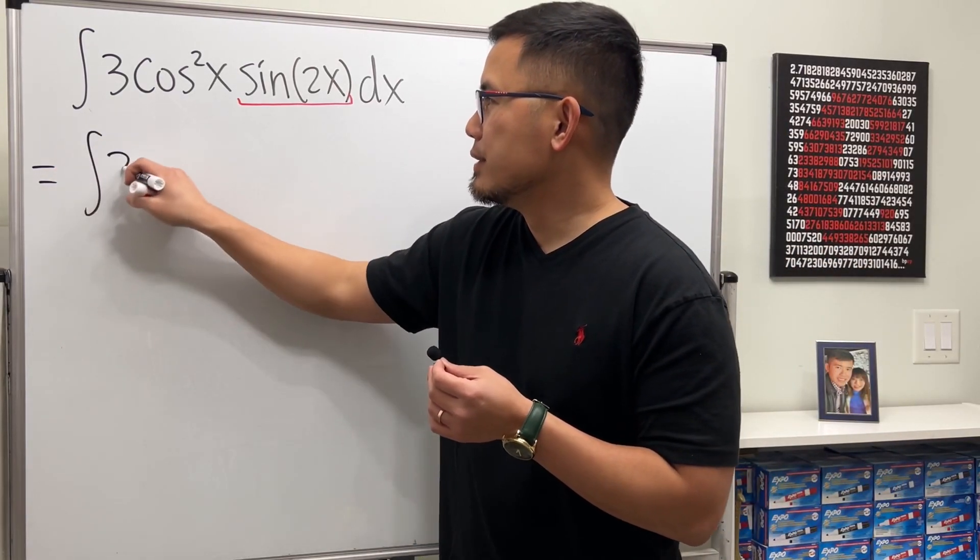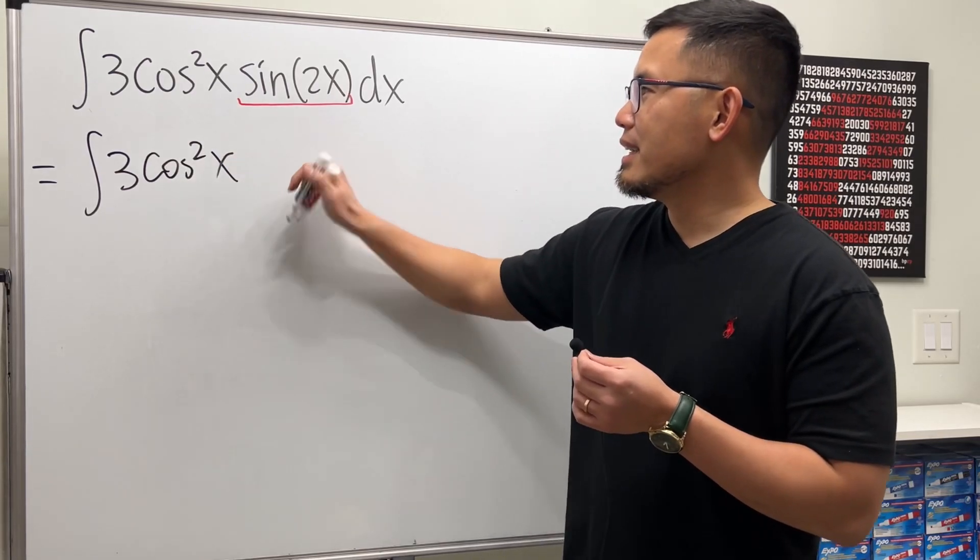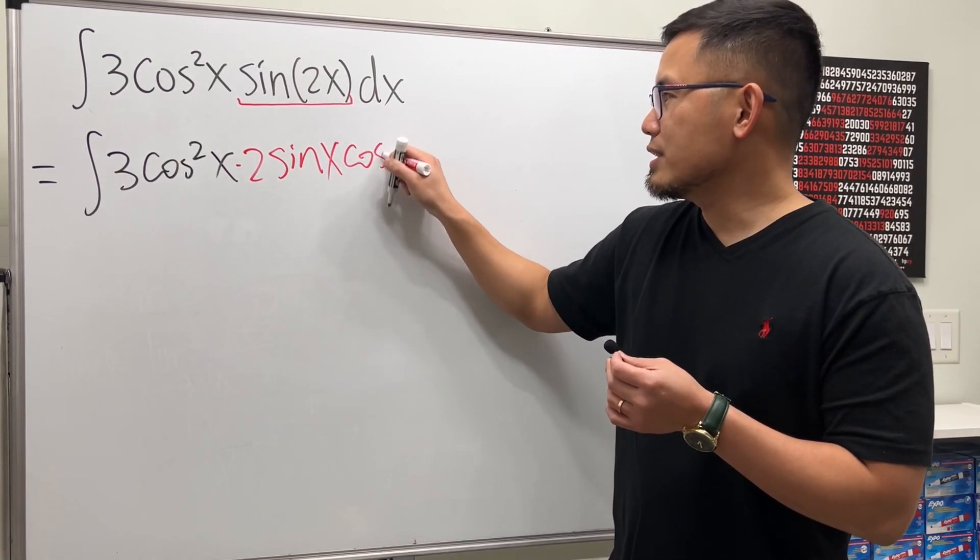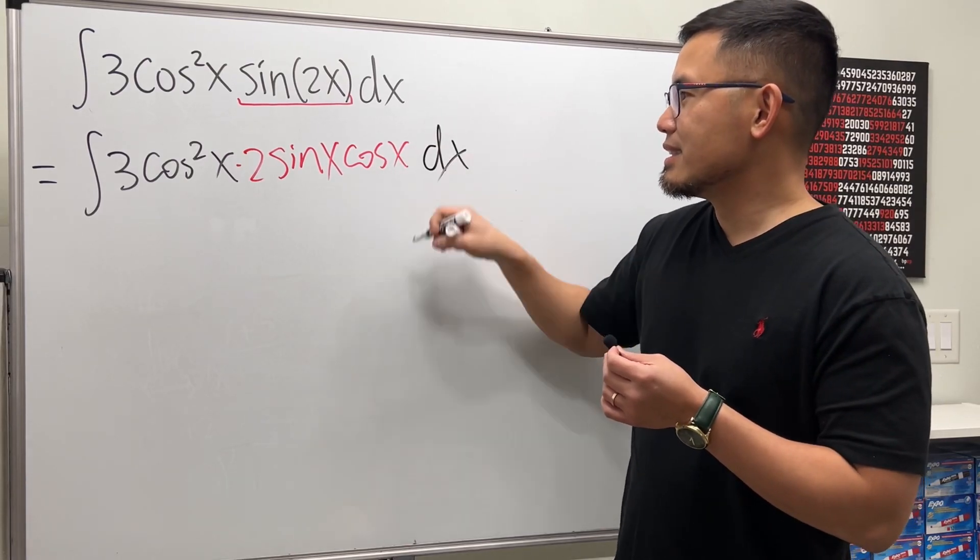So have a look, we will have the integral 3 times cosine squared x, and this right here is 2 sine x cosine x, and then dx.